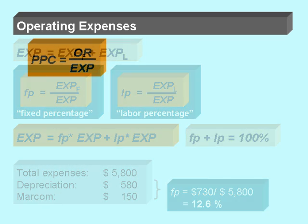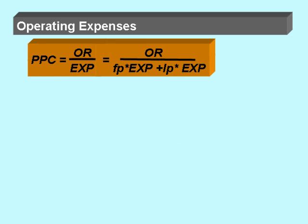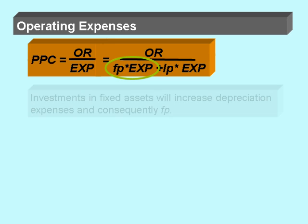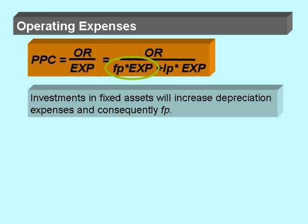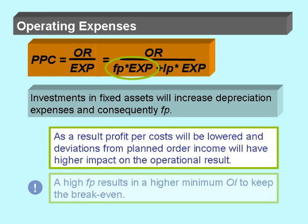Profit per cost is the ratio of operational result over expenses. If we split the total expenses into fixed expenses and labor related expenses, we see that an investment in fixed assets will increase the depreciation expenses as part of the fixed expenses and consequently FP. As a result, profit per cost will be lowered and deviations from planned order income will have a higher impact on the operational result. A high fixed percentage results in a higher minimum order income to keep the break even.